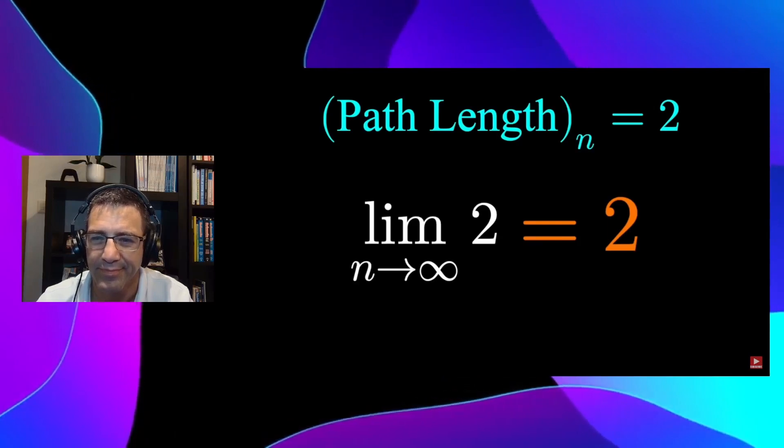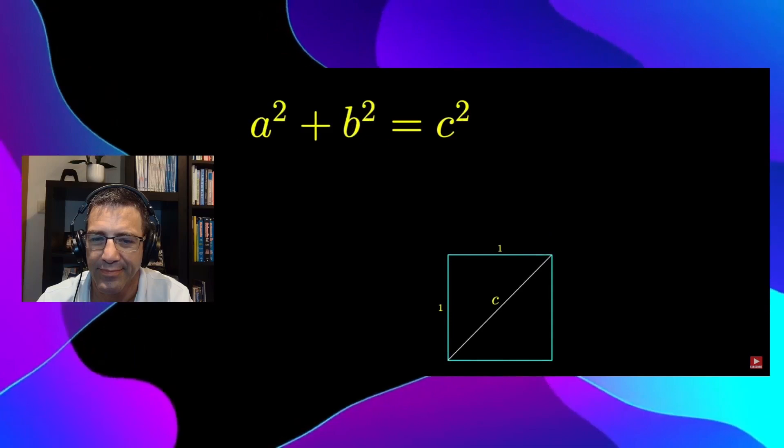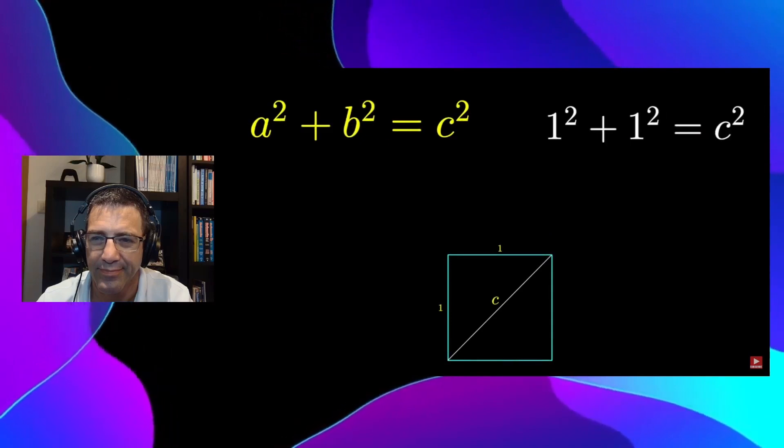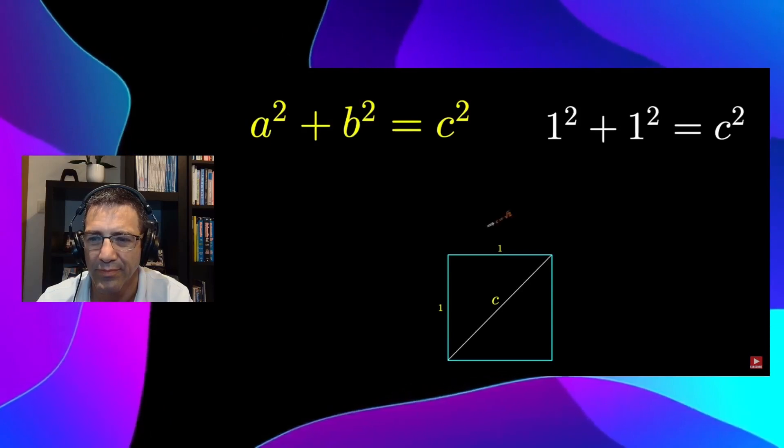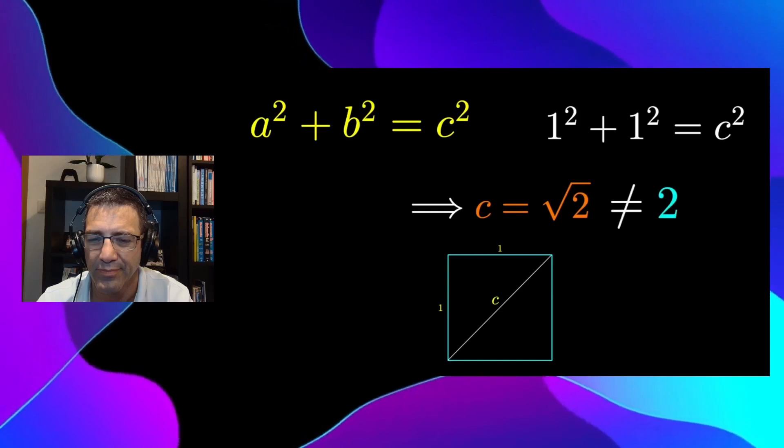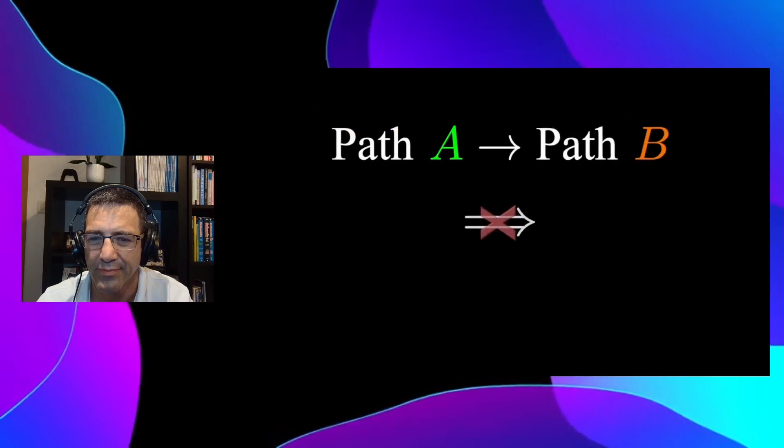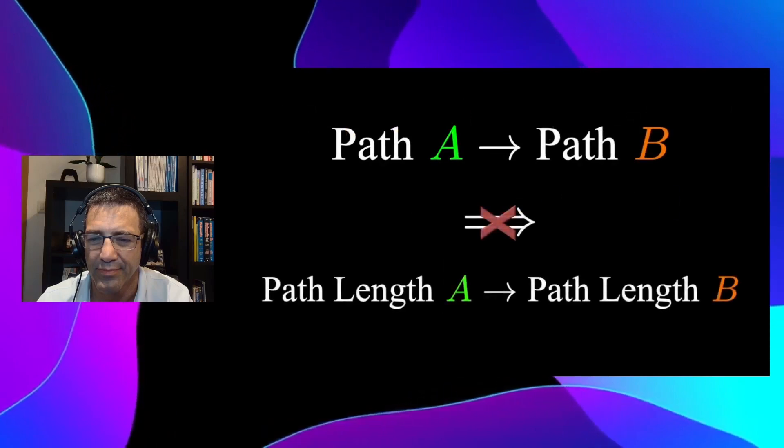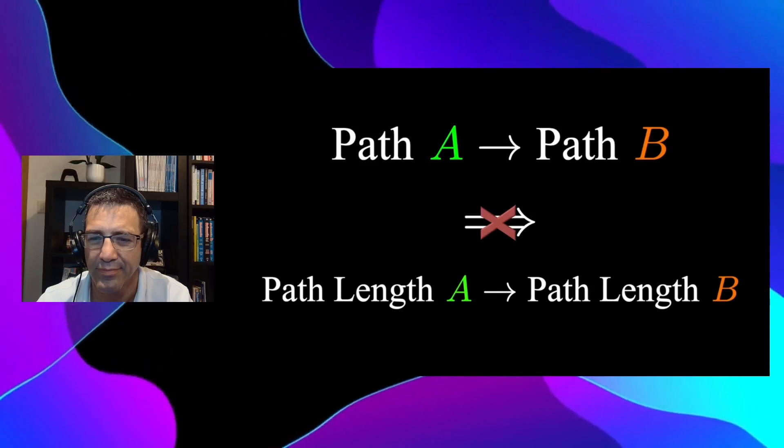But we know the true length of this diagonal by the Pythagorean theorem. Just say 1 squared plus 1 squared equals the diagonal's length squared. The diagonal's length is square root of 2, which is different from the path length of our staircase. One path approaching another does not mean that the path lengths are equal. And this logic exposes the fallacy that pi equals 4.